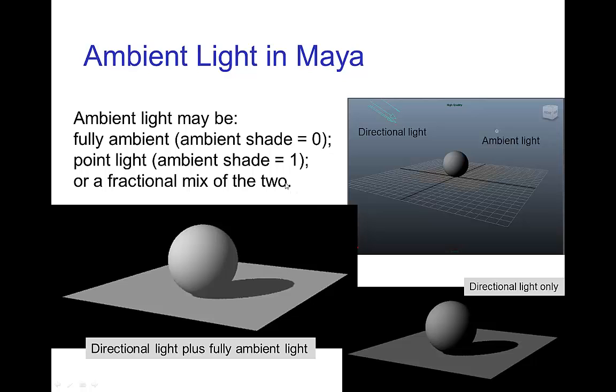You see an example here of a rendered image using a directional light plus a fully ambient light, and of course the ambient light illuminates into the cast shadow.